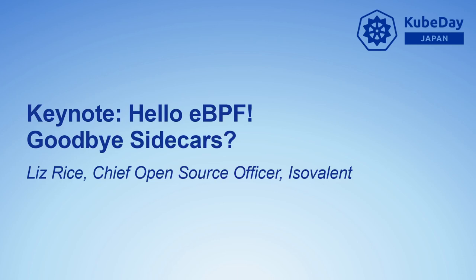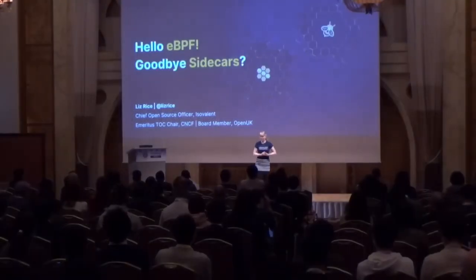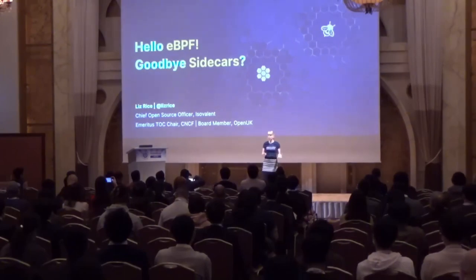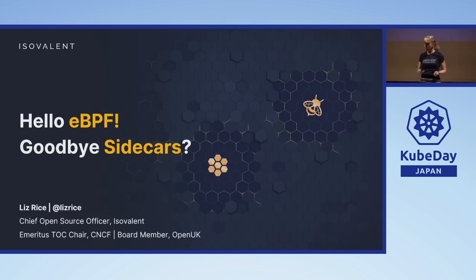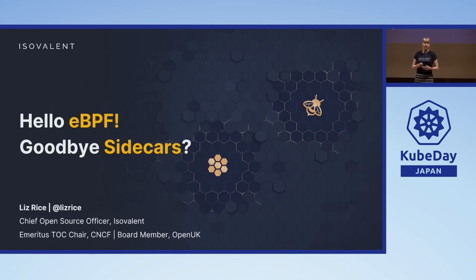My name's Liz Rice. I work at Isovalent, which is the company that originally created the Cilium networking project that Katie and Kohei already mentioned this morning. Cilium is proudly an incubating project and it's based on eBPF. I'm going to be talking about why eBPF is such a powerful platform for not just networking, but also observability and security infrastructure tooling, and why perhaps we no longer need to rely on the sidecar model going forward. You may have seen me before as the chair of the Technical Oversight Committee at the CNCF, and I'm also involved in an organization called Open UK, which encourages collaboration around open source in the UK and also internationally.